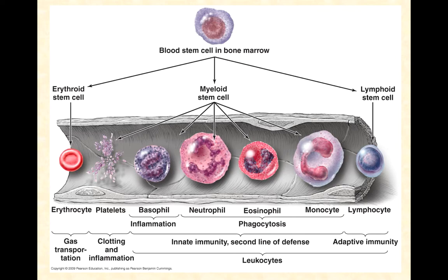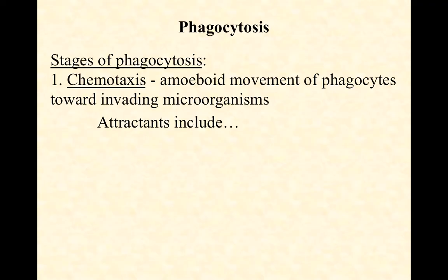A neutrophil is active as-is and ready to fight. Monocytes need a further step in development to become macrophages, but they don't take that step until something induces them to do so. We'll talk about what can induce a monocyte to finish its last stage of development and become an active phagocytic macrophage. So what we're talking about here are primarily neutrophils and monocytes. Let's look at the stages of phagocytosis.